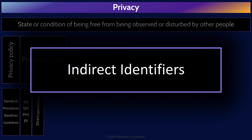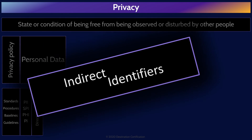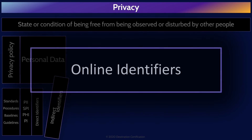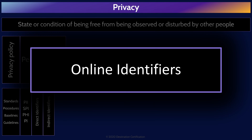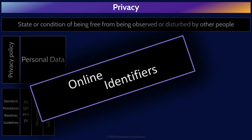Indirect identifiers do not on their own directly identify an individual, but if you have enough indirect identifiers, you can uniquely identify an individual. Indirect identifiers are things like age, gender, ethnicity, the state someone lives in, or the city, their zip code or postal code. You can also group some identifiers together that are used online — things like email addresses, IP addresses, and cookies — and these are sometimes referred to as online identifiers.